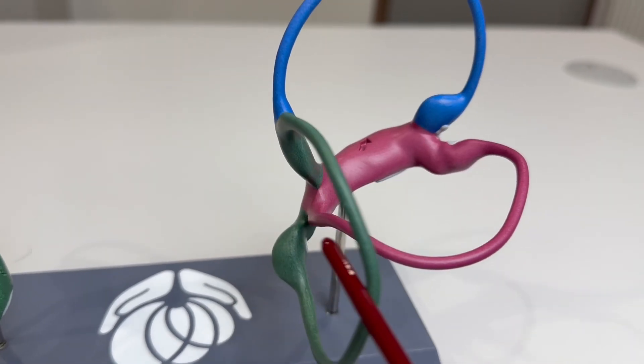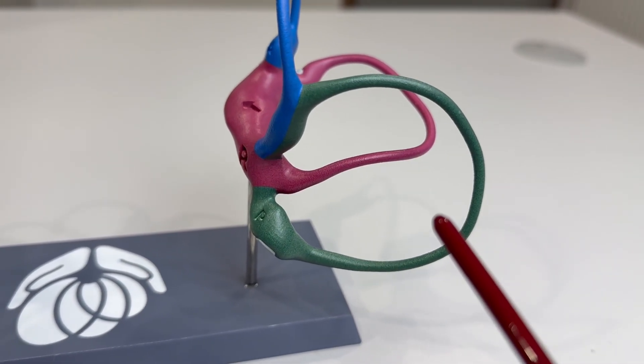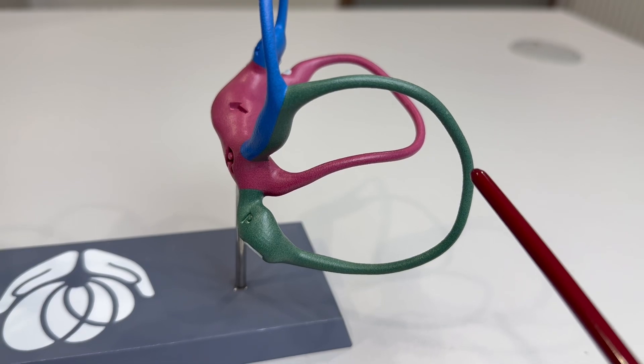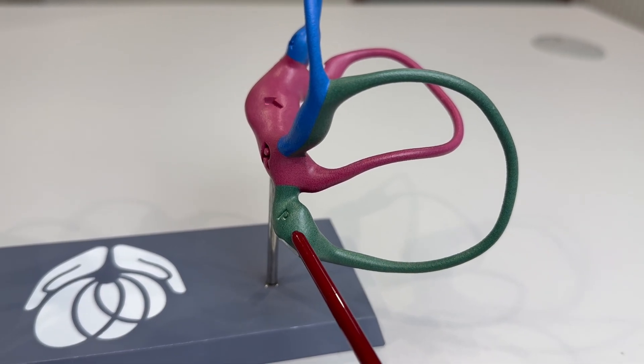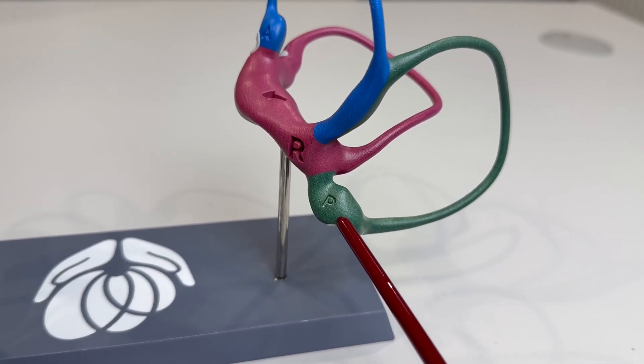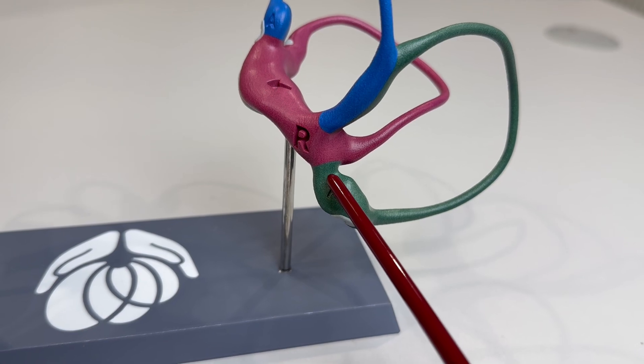Each semicircular canal has three parts: the long arm, the ampulla at the end, and the short arm just behind the ampulla.